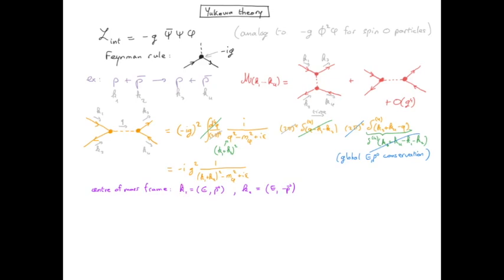And because they have the same mass, if they have the same magnitude of the momenta they necessarily have the same energy. Therefore k1 plus k2 is simply equal to 2E for the time-like component and zero for the space-like component.